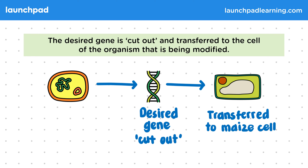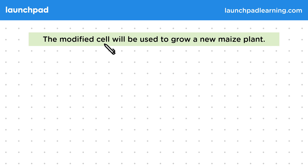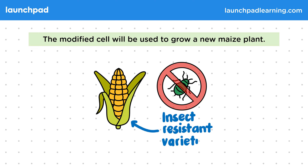What's the outcome of this? The modified cell will be used to grow a new maize plant. This new maize plant is an insect-resistant variety of maize.